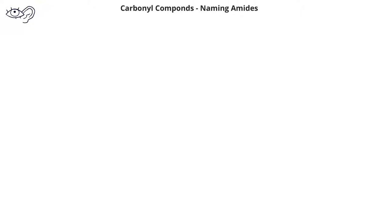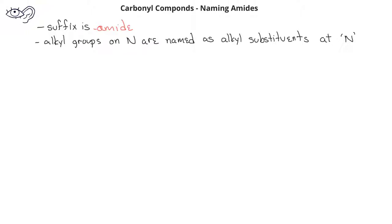Naming amides is a little bit different from the other carboxylic acid derivatives. To begin with, we change the suffix part of the name to -amide. Unlike esters, the alkyl group on the nitrogen is treated as a normal substituent, as we did with amines. In other words, we indicate that alkyl groups bonded to the nitrogen are located at the N. We do not name the alkyl groups on the nitrogen by putting the name of the substituent in front of everything else.